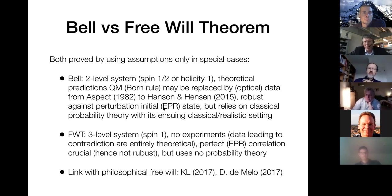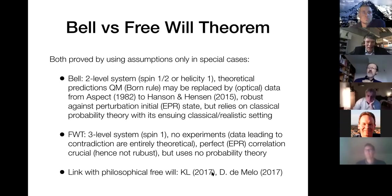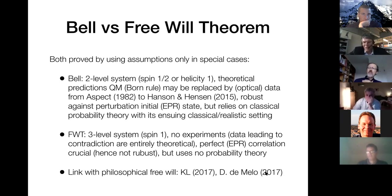One of the improvements of Bell over EPR was to remove the dependence on perfect correlation. The link with philosophical free will is not given by either Conway and Kochen or 't Hooft. There's a very good master's thesis in philosophy on my website by someone called Davide de Melo, which I recommend. Unfortunately he became a consultant afterwards.